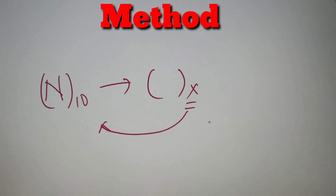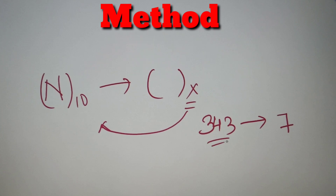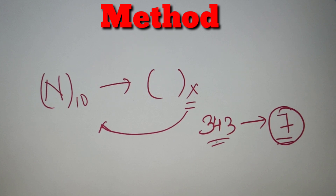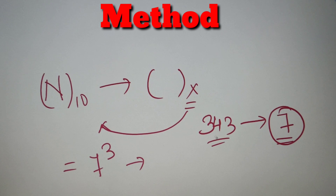For example, if the number is 343 and we have to find the number of trailing zeros when it is converted to base 7 — 343 is given in base 10 and we need trailing zeros in base 7 — we just find the highest power of 7 in 343. Since 343 equals 7 cubed, the number of trailing zeros when 343 is converted to base 7 is equal to 3.